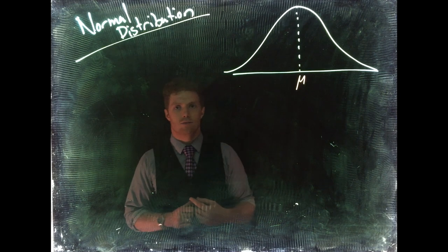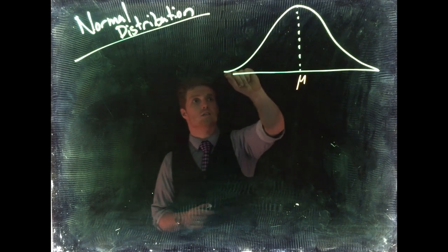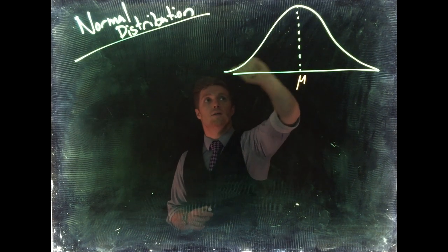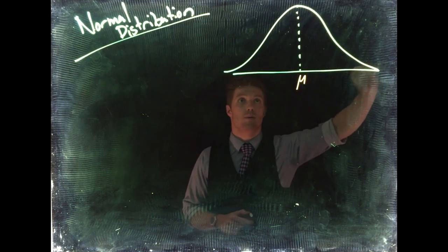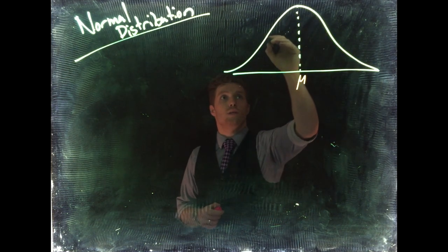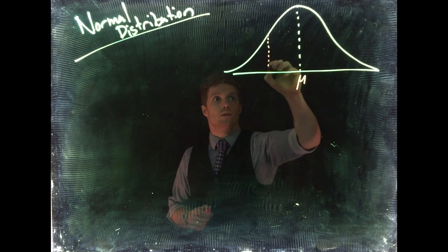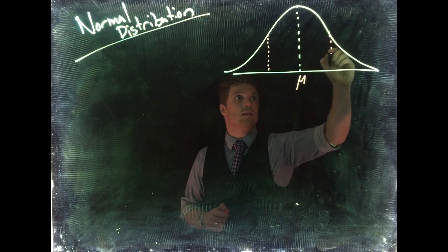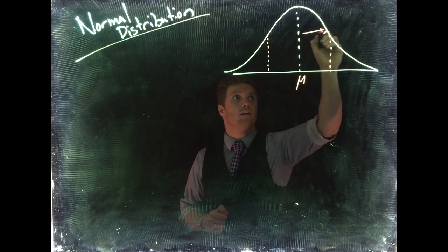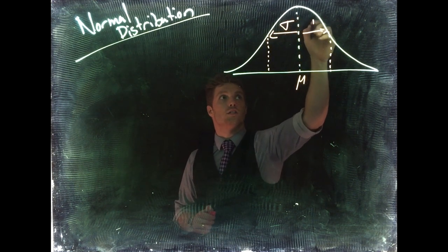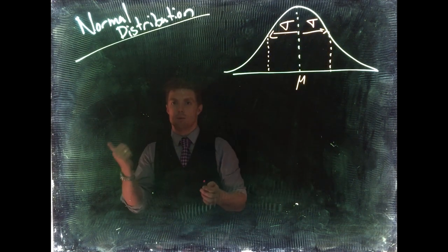What's really neat is that in a normal distribution we can find where the standard deviation is by finding the inflection point. If you remember back from geometry, inflection points are where a curve switches from concave up to concave down or from concave down to concave up. So we can draw this really easily—I'm just going to do a little dot there and a little dot there.